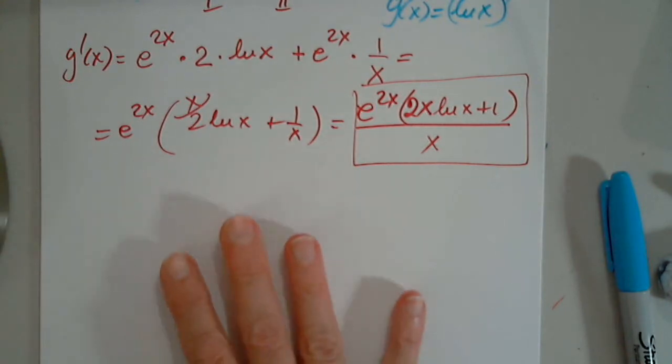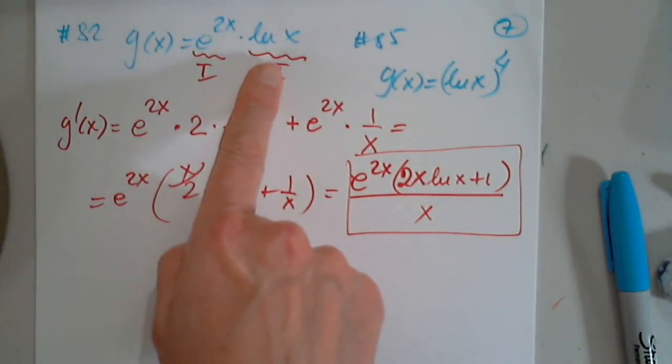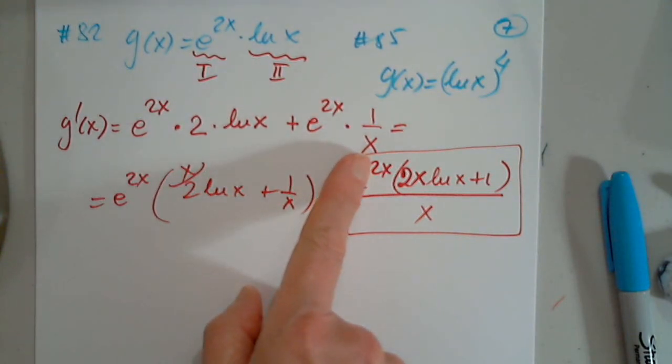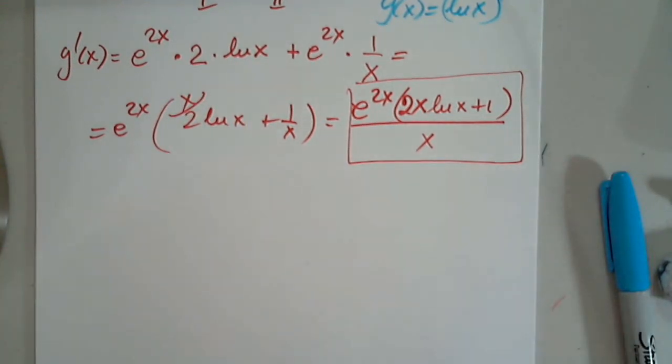Any questions on this problem before we look at 85? How did you get the x in the denominator? The derivative of a natural log is 1 over x. Oh, yeah. Okay. Now, 85.